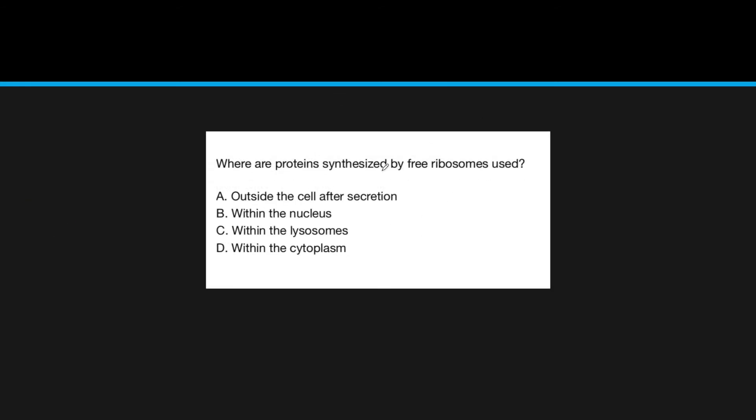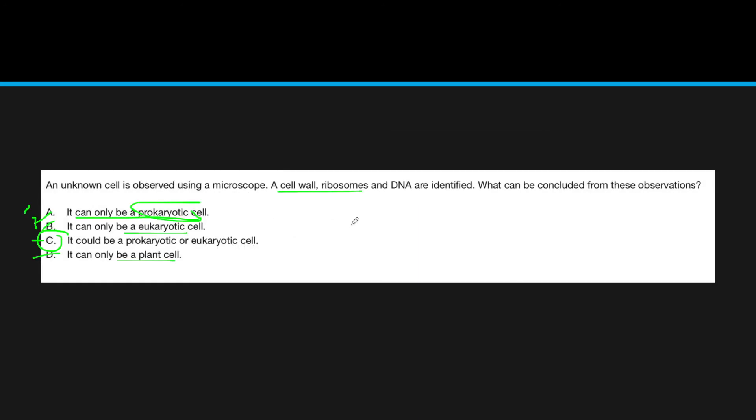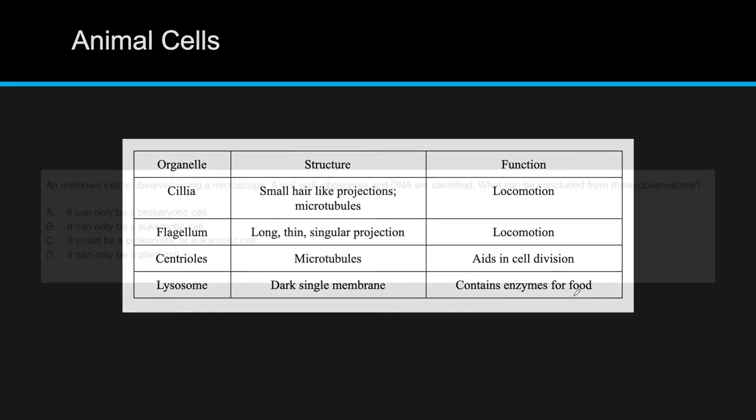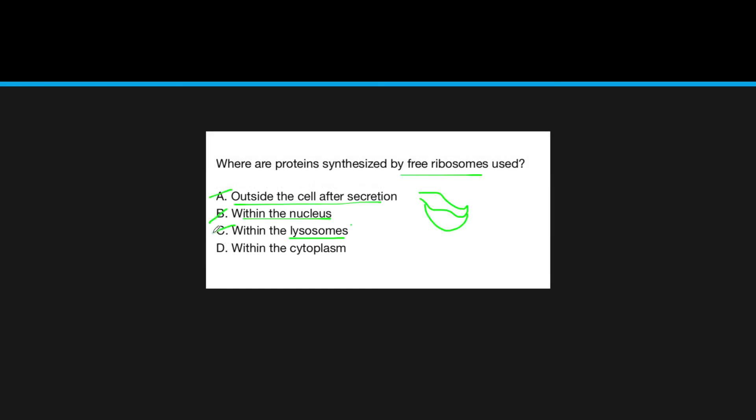Here's another example. Where are proteins synthesized by free ribosomes used? Outside of the cell after secretion, well, we just said that these occur in the endoplasmic reticulum, the rough ER, so that's not true. Within the nucleus, well, we never really discussed any free ribosomes being used to create proteins for inside the nucleus. Within the lysosome, well, that's not necessarily true because the lysosomes are used for digestive processes. So, you wouldn't want to digest a protein you just made, so that leaves within the cytoplasm.